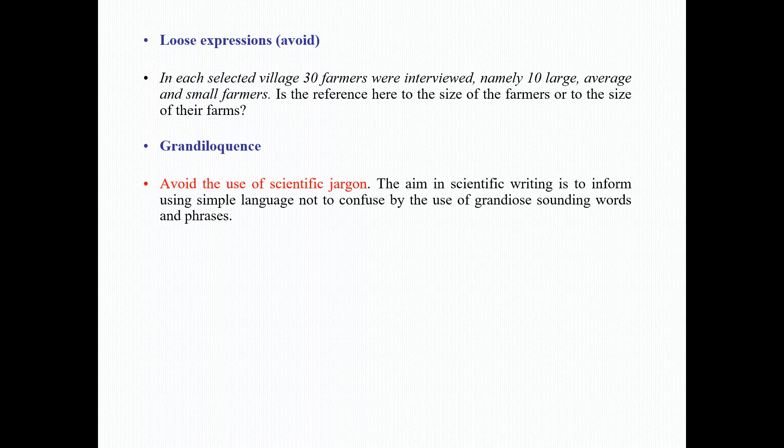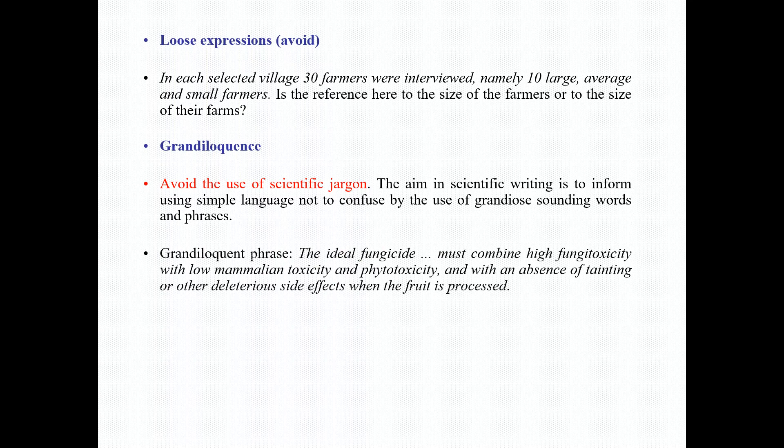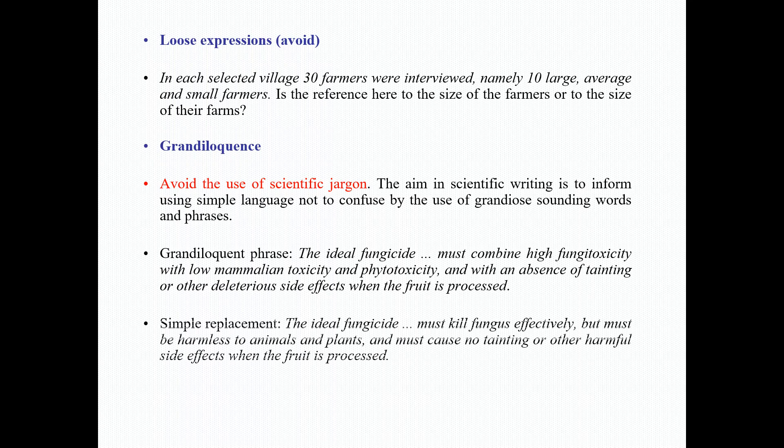Grandiloquence: Avoid the use of scientific jargon. The aim in scientific writing is to inform using simple language, not to confuse by the use of grandiose sounding words and phrases. Example of grandiloquent phrase: 'The ideal fungicide must combine high fungitoxicity with low mammalian toxicity and phytotoxicity and with an absence of tainting or other deleterious side effects when the food is processed.' Simple replacement: 'The ideal fungicide must kill fungus effectively but must be harmless to animals and plants and must cause no tainting or other harmful side effects when the food is processed.'